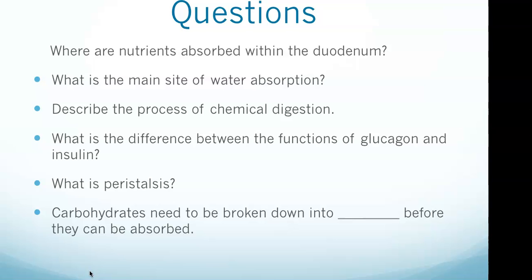Some of the focuses: where are nutrients absorbed within the duodenum, the main site of water absorption, being able to describe the process of chemical digestion as well as digestion and absorption — those are two big concepts. The difference between glucagon and insulin, knowing what peristalsis is, and carbohydrates need to be broken down into blank before they can be absorbed. There are also many hormones whose functions we need to know, as well as the origin and function of some digestive enzymes.